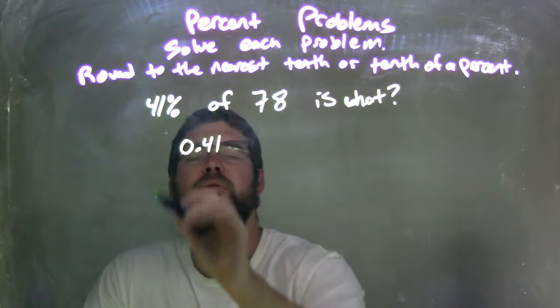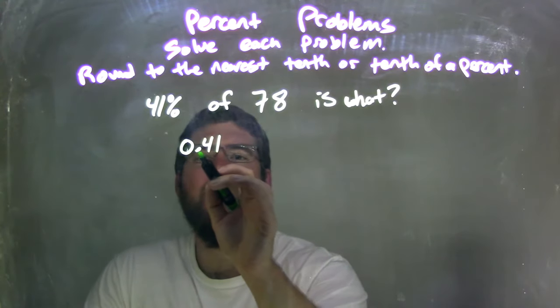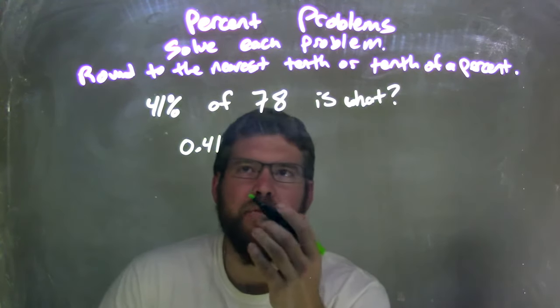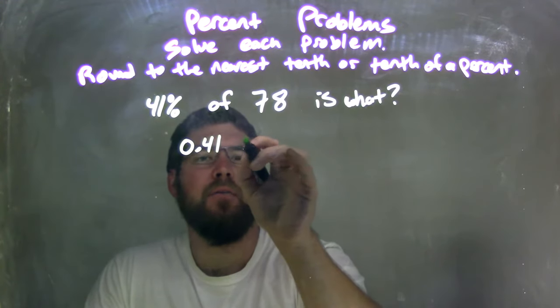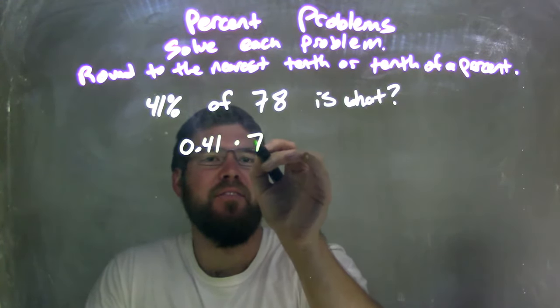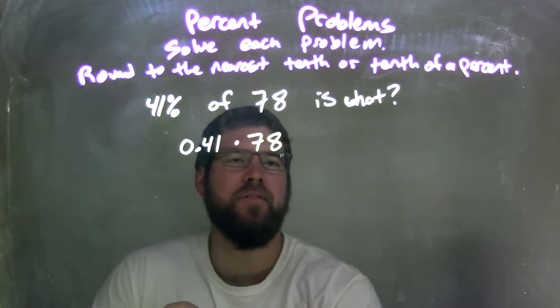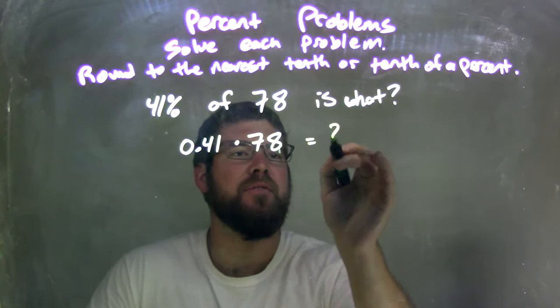I can move the decimal place to the left. So 0.41, right, 41%, 0.41 of 78, well, that's going to be multiplied. So times 78 here, multiplied by 78 is what we're trying to find.